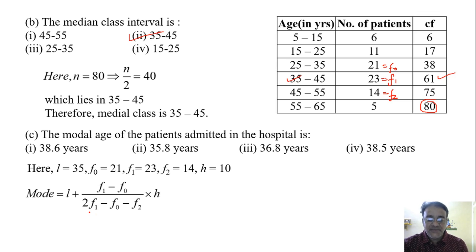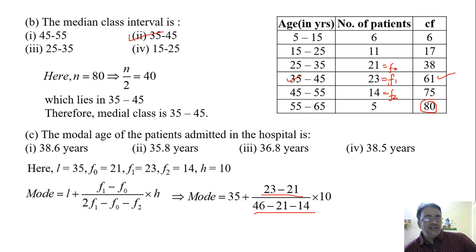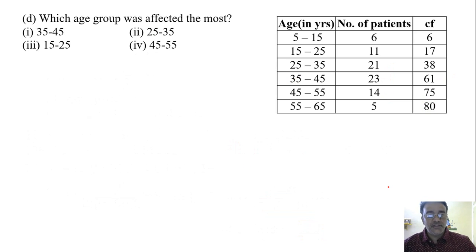Now we'll substitute all the values: 35 plus 23 minus 21 upon 2F1 means 46 minus 21 minus 14. So we'll get 2 and here 46 minus 35 is 11. If you solve we will get 36.8 approximately. Which is the correct option? Third.